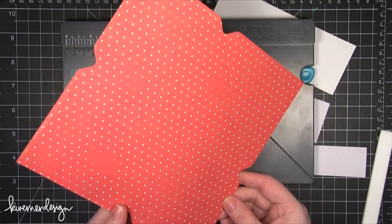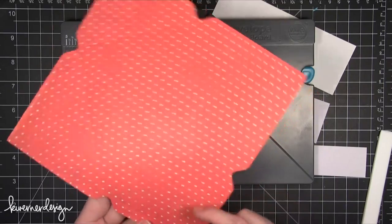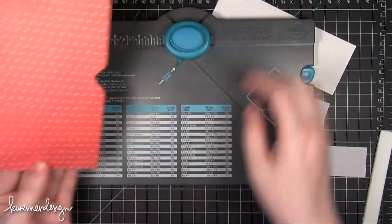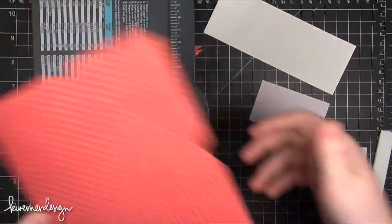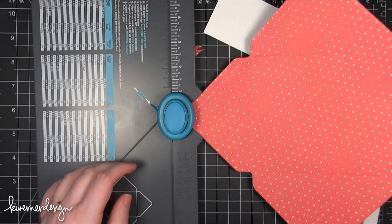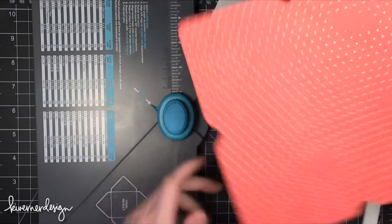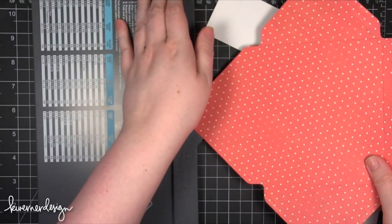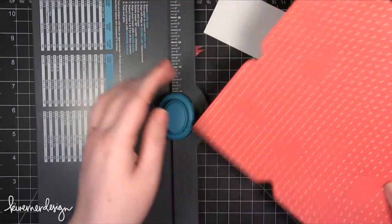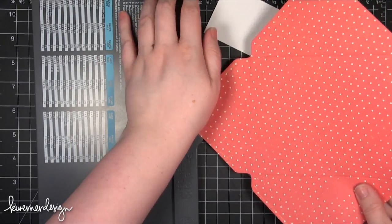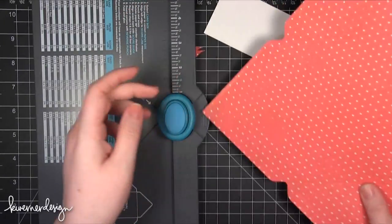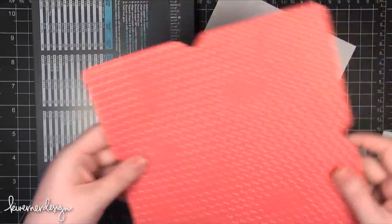You can go ahead and fold your envelope like this if you want, but I want to have rounded flaps. So I'm going to turn my envelope punch board and I can punch from this side. And that just rounds the edge right there.